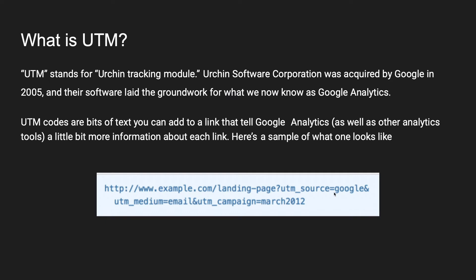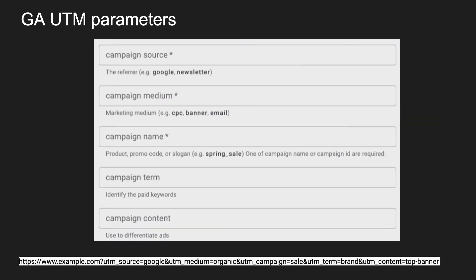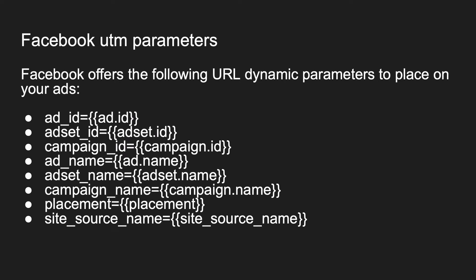We can only use five types of UTM parameters for Google Analytics to parse it correctly: campaign source, medium, campaign name, content, and term. The next step is to understand what dynamic UTM parameters Facebook offers to place on your ads.